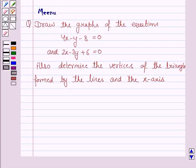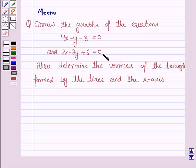Hello and welcome to the session. Let's work out the following problem. It says: draw the graphs of the equation 4x minus y minus 8 is equal to 0, and 2x minus 3y plus 6 is equal to 0. Also determine the vertices of the triangle formed by the lines and the x-axis.